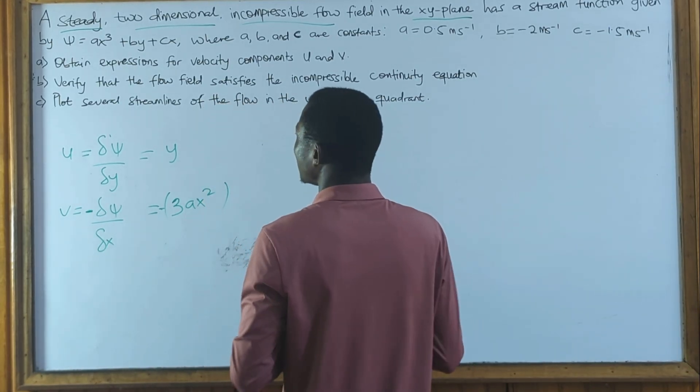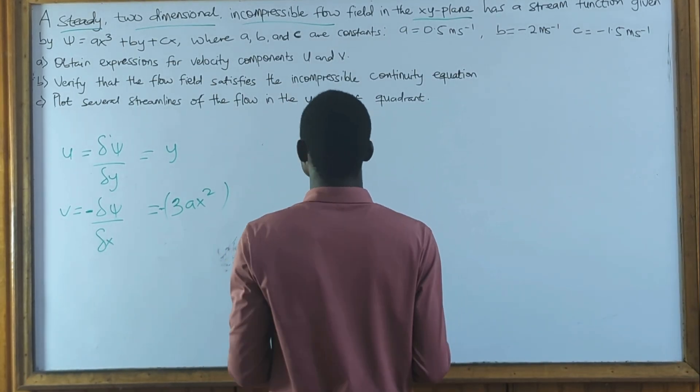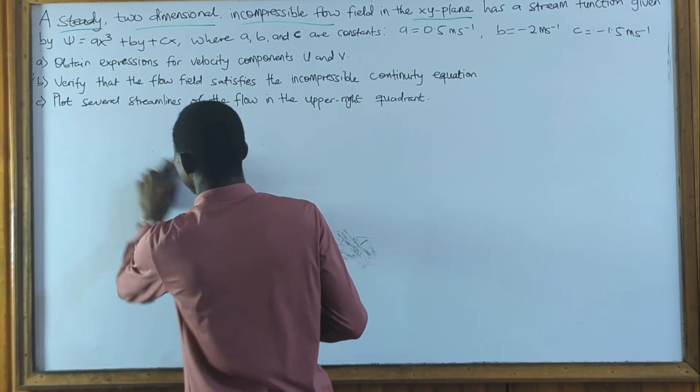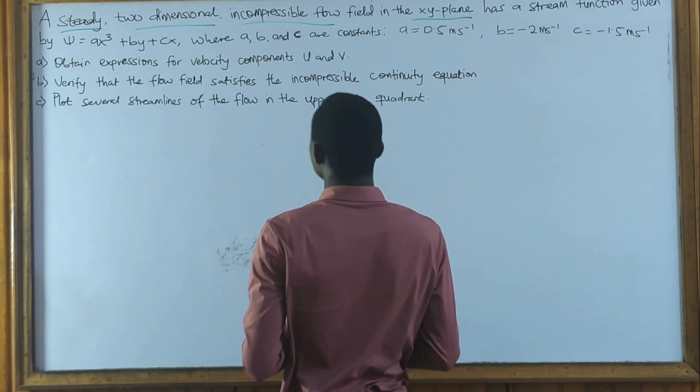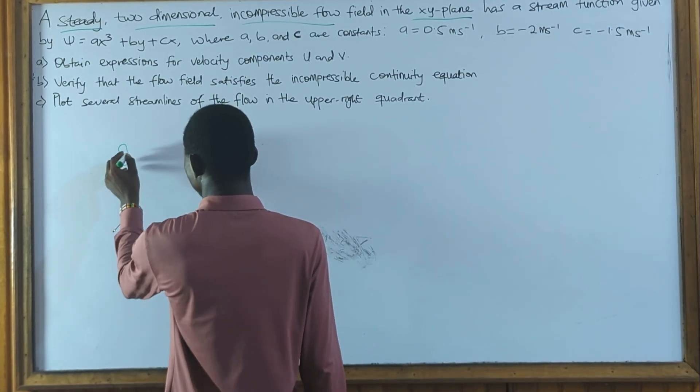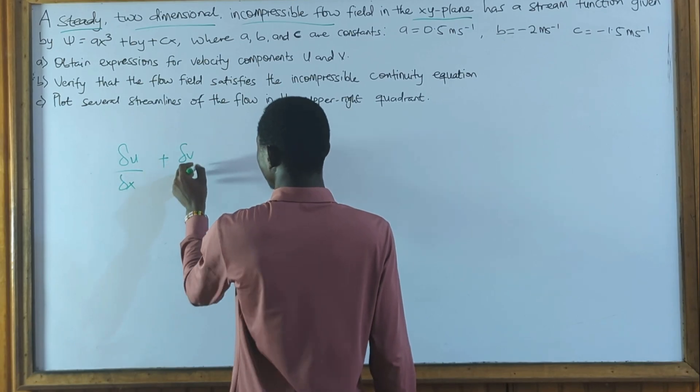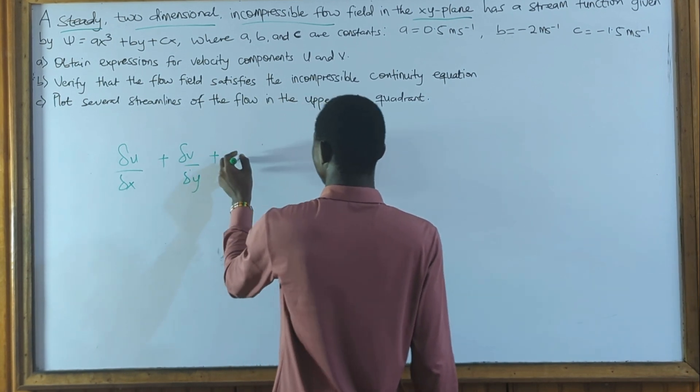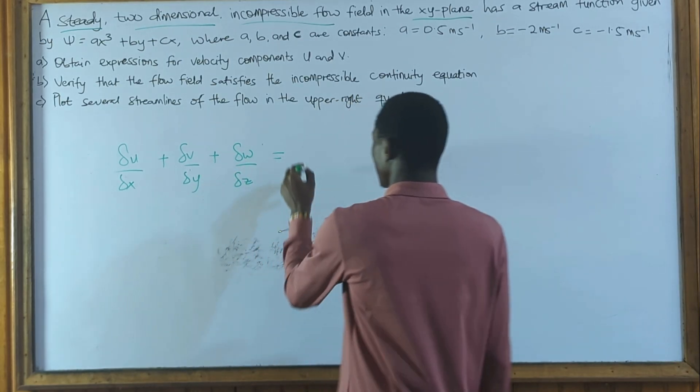Then we move on to the next thing we have to find. We have to verify whether the flow satisfies the incompressible continuity equation. So to do that verification, the equation is supposed to be equal to 0. Whatever you get is supposed to be equal to 0. So this is the expression. So du/dx + dv/dy...